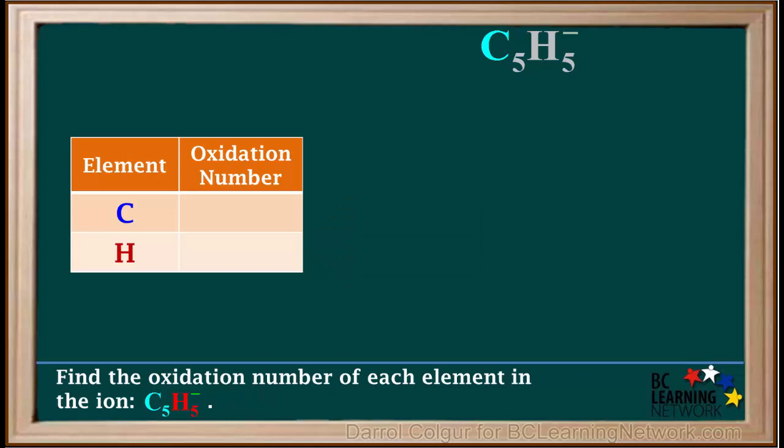Carbon has variable oxidation numbers, so the oxidation number of carbon in this ion is unknown. Therefore, we'll call it X.